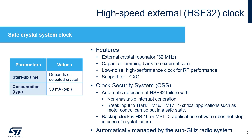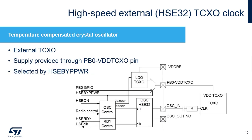The High Speed External Oscillator will automatically be managed in line with the sub-gigahertz radio activity. The HSE clock may come from an external temperature-compensated crystal oscillator. The TCXO operation mode is selected by the HSE-BYPWR bit when used by the CPU, and with the sub-gigahertz radio command set TCXO mode when used by the sub-gigahertz radio. The TCXO supply is available from the PB0-VDD TCXO pin, which is also used to enable and disable the TCXO. The supply level can be selected through the sub-gigahertz radio command set TCXO mode.